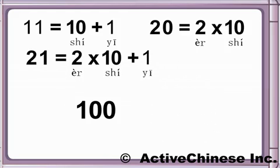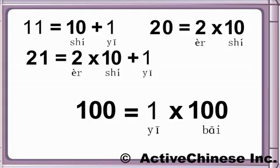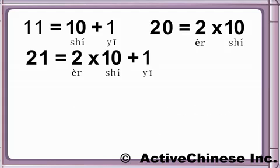A hundred is yí-bǎi. Now you will say some numbers — try to say them in Chinese.